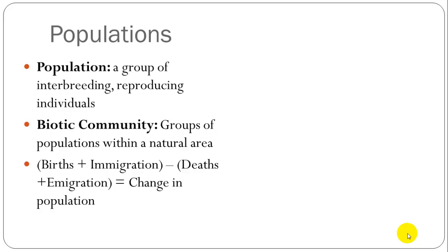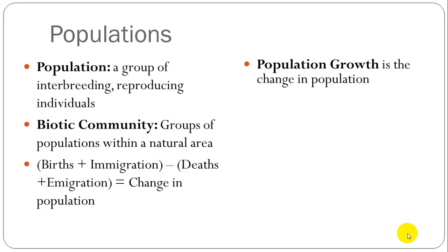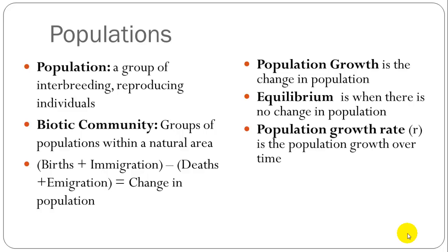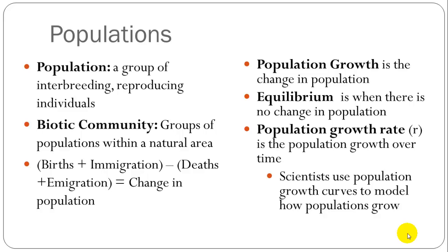When you add those up, you're going to get a population increase or decrease. Population growth is the change in the population. If a population is in equilibrium, that means its population is stable — it's not growing or decreasing. We look at population growth in terms of a growth rate, which is the increase of individuals over time. Curves are used to model population growth, and we'll look at some of those.